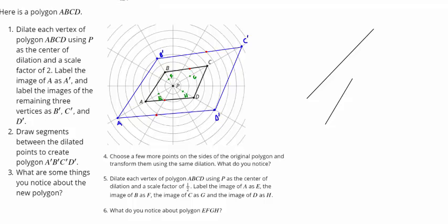And we're going to connect the points to make our lines. So what do we notice about polygon EFGH? It appears to be a scaled copy of ABCD, except that it's smaller. All the E, F, G, H points are half the distance of A, B, C, D from the center of dilation.